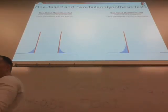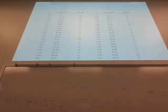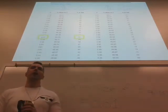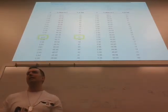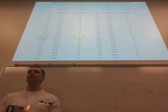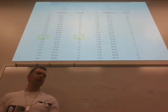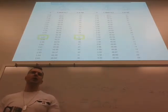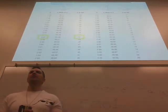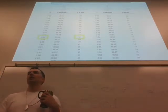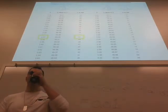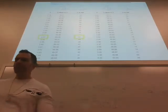Student question: is it always 0.01? Answer: Alpha is 0.05 about 96% of the time, 0.01 about 3% of the time, 0.001 occasionally, and very rarely anything higher than 0.05.